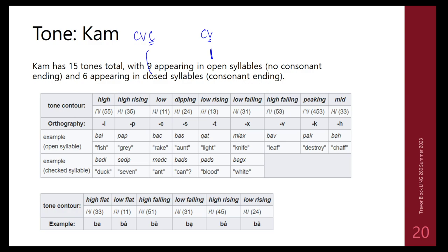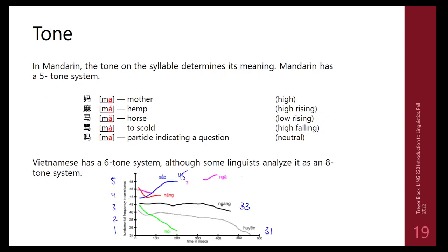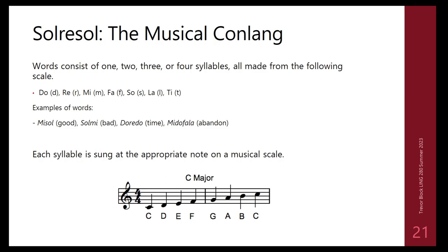The musical conlang Sol-re-sol uses all seven solfège syllables — do, re, mi, fa, sol, la, ti — and the pitch must be accurate to the actual musical scale: 'do' at C, 're' at D, 'mi' at E, and so on. Words are constructed from these syllables: for example, 'mi sol' or 'sol mi' or 'do re do' (meaning 'time'), 'mi do fa la' (meaning 'abandon'). All words are essentially sung at the appropriate musical pitch.